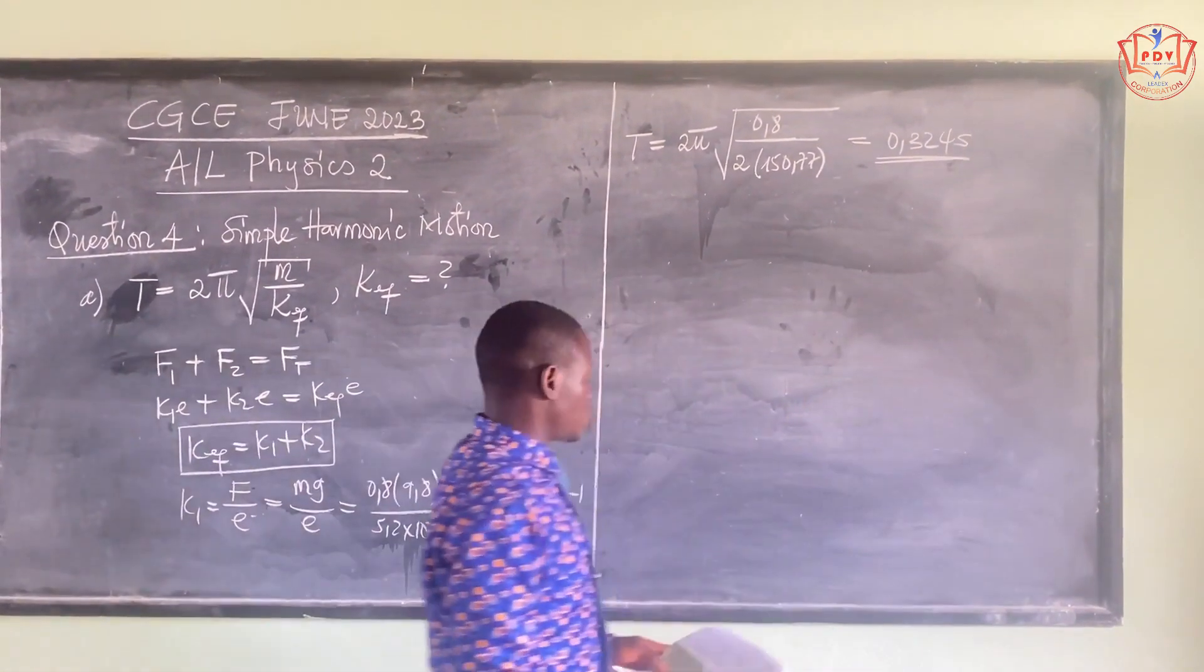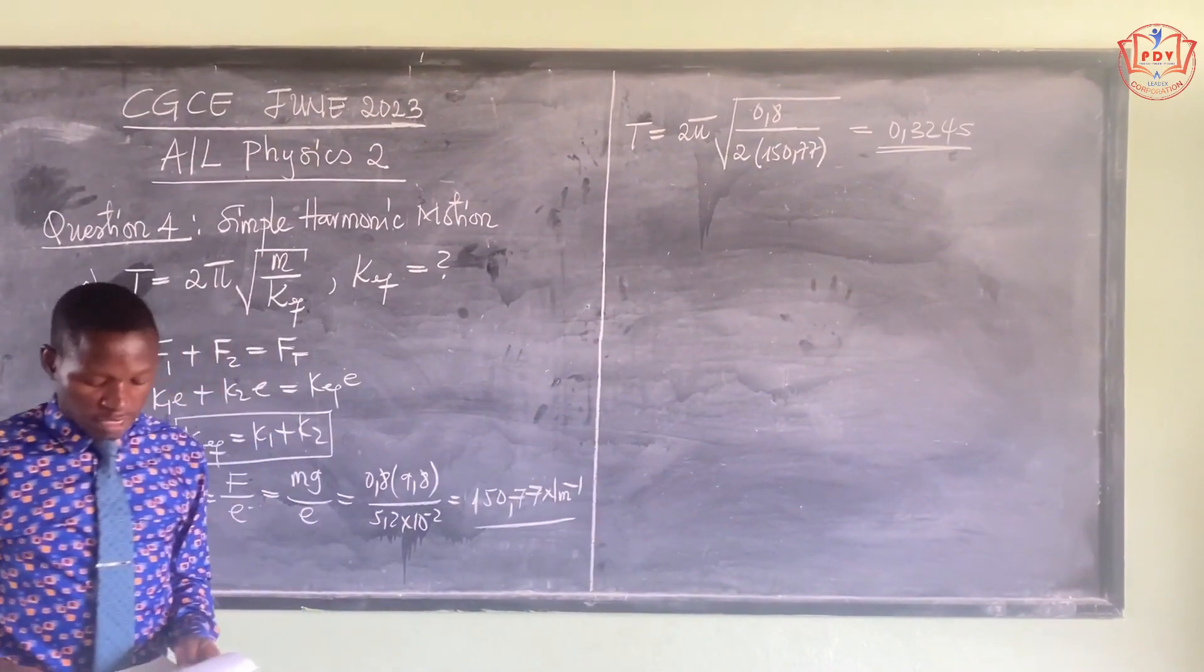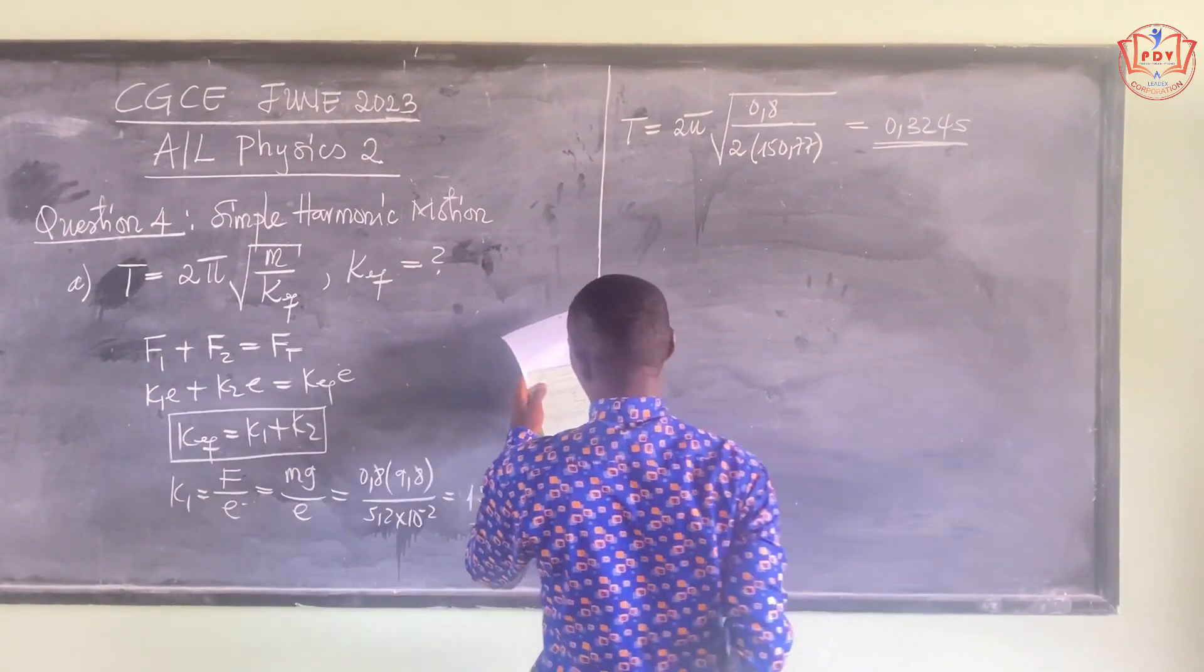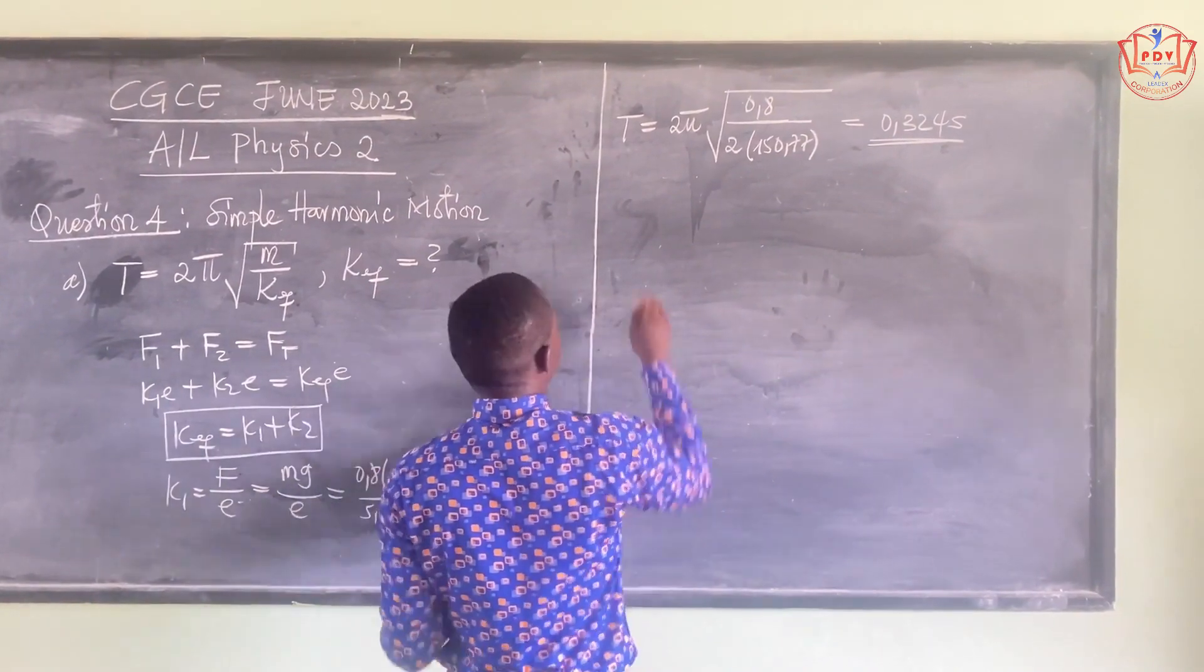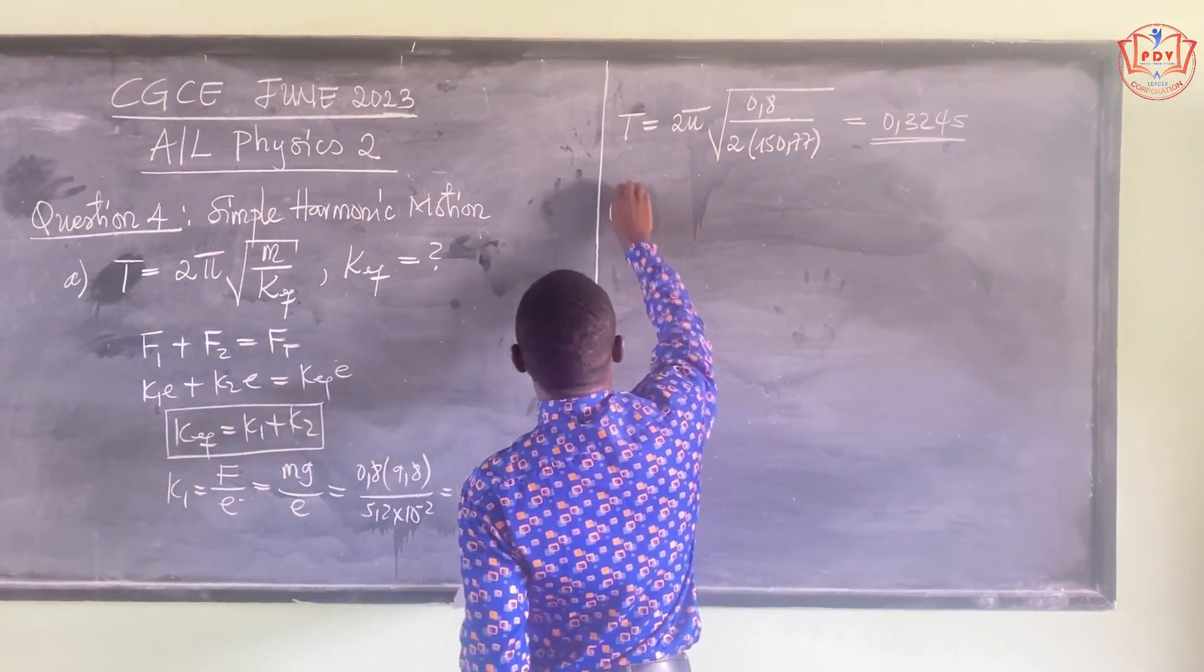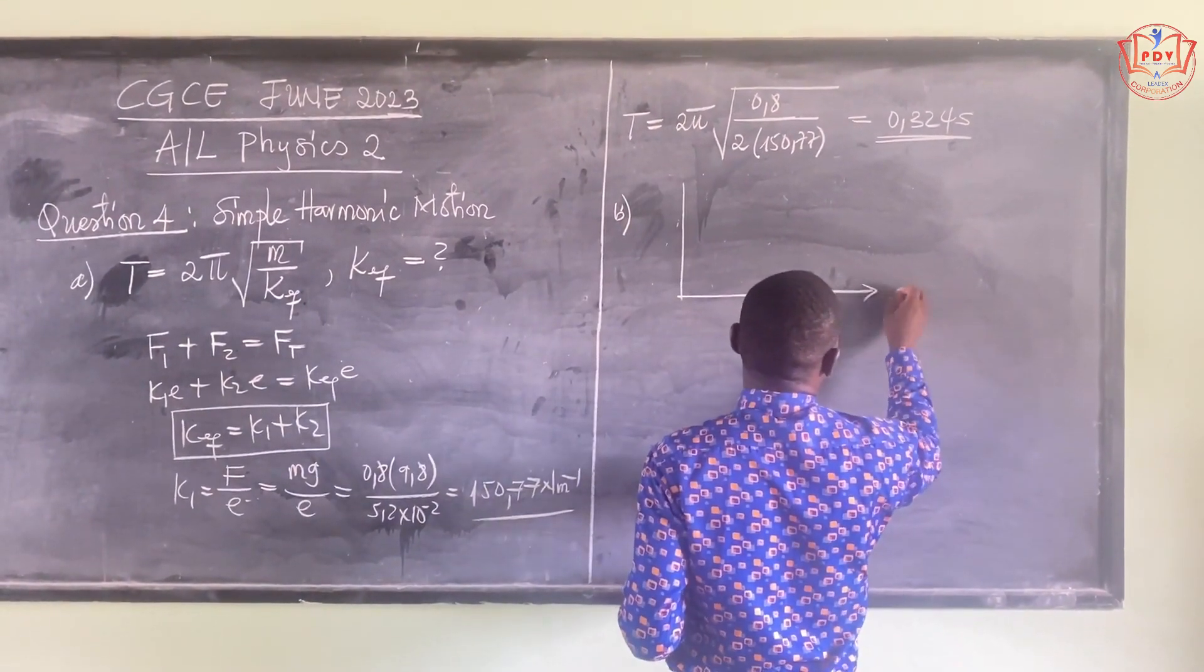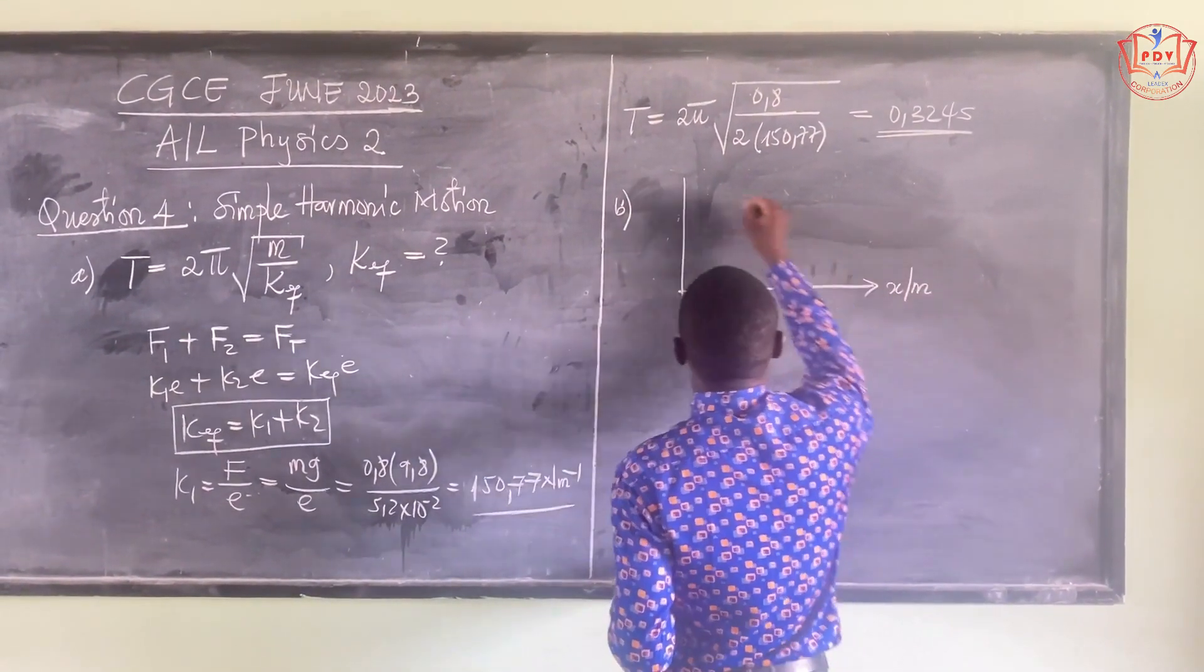So that is the expression for the period of oscillation of the mass. Lastly, we are asked to sketch a graph to show how the mechanical energy varies with displacement.